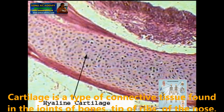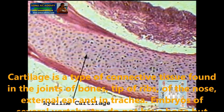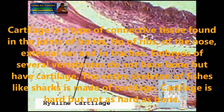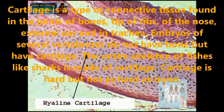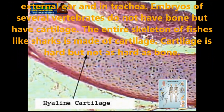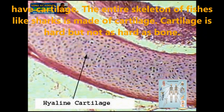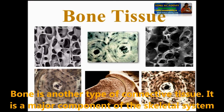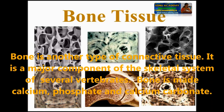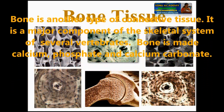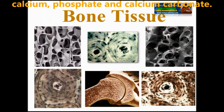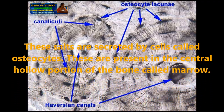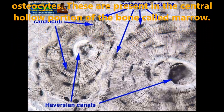Cartilage is a type of connective tissue found in the joints of bones, ribs, tip of the nose, external ears and in the trachea. Embryos of several vertebrates do not have bone but have cartilage. The entire skeleton of fishes like sharks is made up of cartilage. Cartilage is hard but not as hard as bone. Bone is another type of connective tissue and is the major component of the skeletal system of several vertebrates. Bone is made up of calcium phosphate and calcium carbonate, secreted by cells called osteocytes, which are present in the central hollow portion called bone marrow.